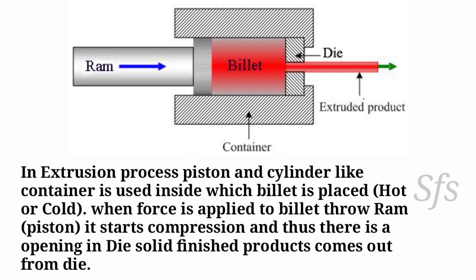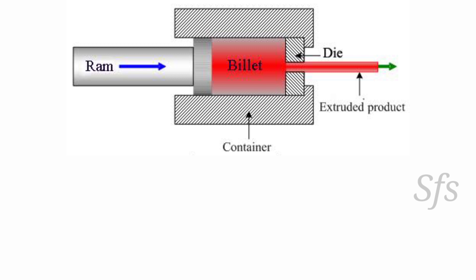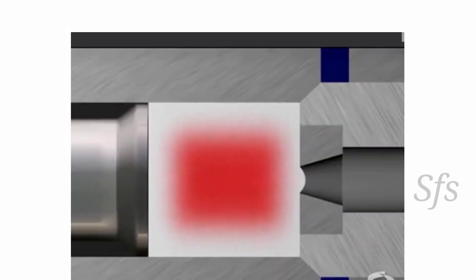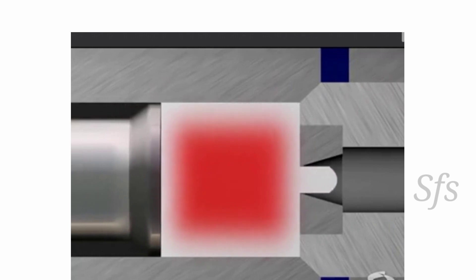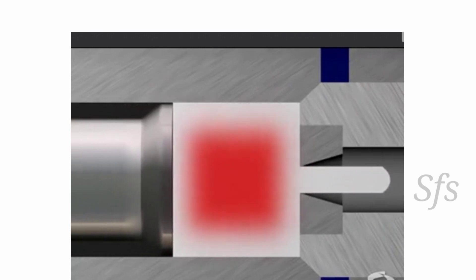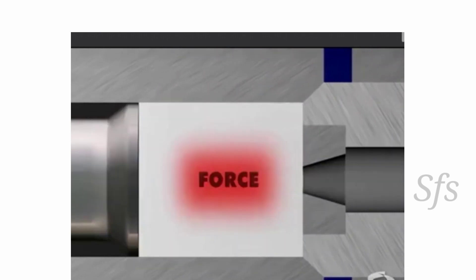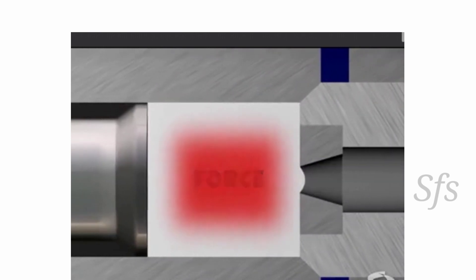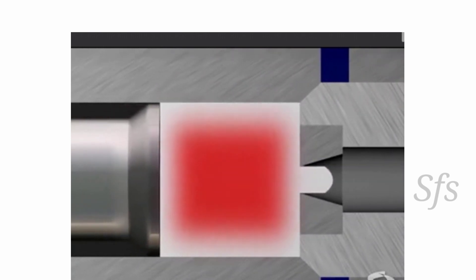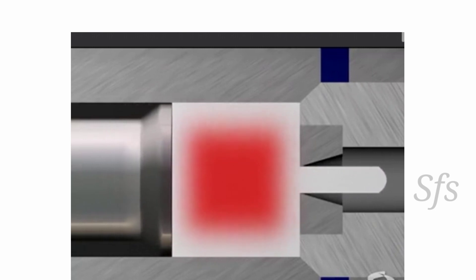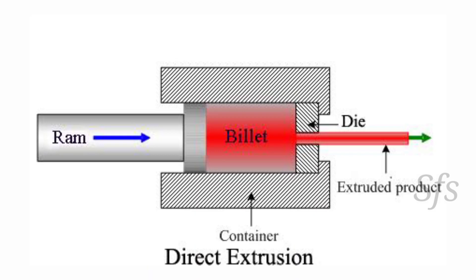For extrusion of a solid round bar, a round shape die is used, and for any other shape, different types of dies are used. Now let us understand this with the help of the animated video. This type of extrusion process is called the direct extrusion process.